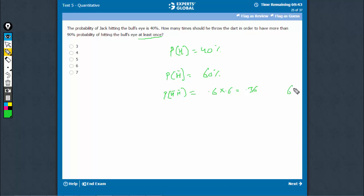Therefore, the probability of hitting at least once becomes 64%. In three attempts, not hitting all three times would be 0.6 × 0.6 × 0.6 = 0.216.